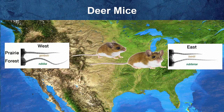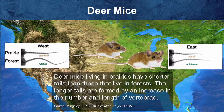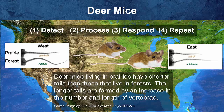Ever hear of deer mice? These mice live all over the country, and scientists discovered that mice living in the prairies have shorter tails than those in the woods, since the forest mice use their tails to balance on branches. If you take prairie mice and put them in the forest, and forest mice and put them in the prairie, the next generation's tails will adjust again. Detect, process, respond, repeat.